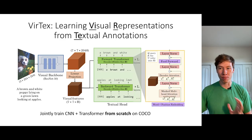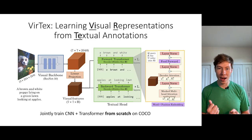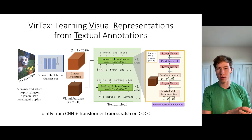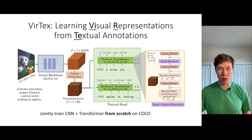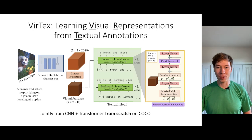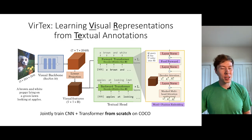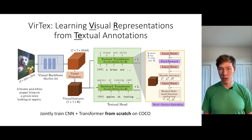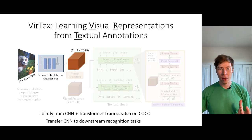These transformers are standard transformers that perform masked multi-headed attention over the input textual sequence generated so far, decoder attention over the visual features, and then have layer normalization and feed-forward networks, all stacked in a standard transformer setup. So the mechanism is actually very simple. We take this CNN plus transformer, train it from scratch on the COCO dataset to predict captions from images, and then transfer the CNN to downstream visual recognition tasks.